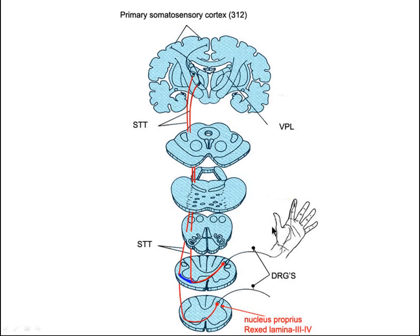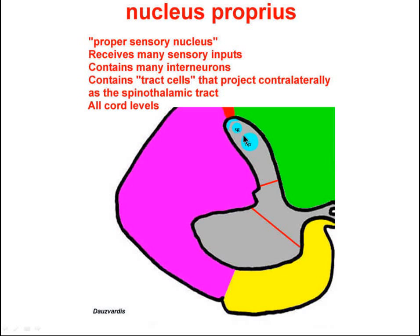The entire pathway consists of three axons. Let's introduce pain in the form of heat to the fingertip. There are thermoreceptors in the fingertip that fire and relay pain through the dorsal root to the dorsal horn — specifically, the nucleus proprius of the dorsal horn. In this drawing, you can see this little circle here represents the nucleus proprius, or the proper sensory nucleus.